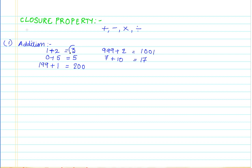Now let's check the results. Is 3 a whole number? Yes. Is 5 a whole number? Yes. Is 200 a whole number? Yes. Is 1001 a whole number? Yes. Is 17 a whole number? Yes. If you keep adding any two whole numbers, you will always observe that the result is always a whole number. This implies that whole numbers are closed under addition.